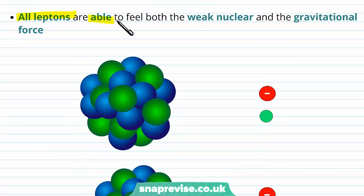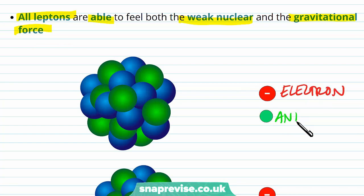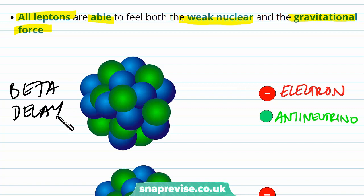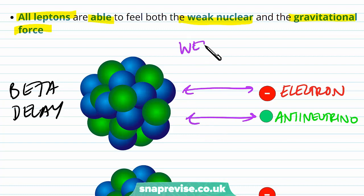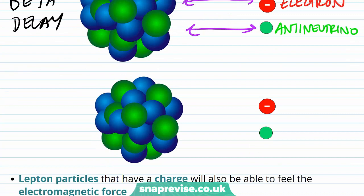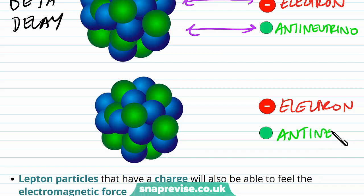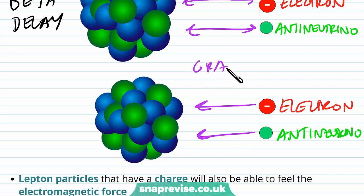All leptons are able to feel both the weak nuclear force and the gravitational force. For example, the electron and the antineutrino are both involved in beta decay, which is when a proton or neutron changes within the nucleus — so since they are part of beta decay, both experience the weak nuclear force. They also both experience the gravitational force, which is why they are classified as leptons.